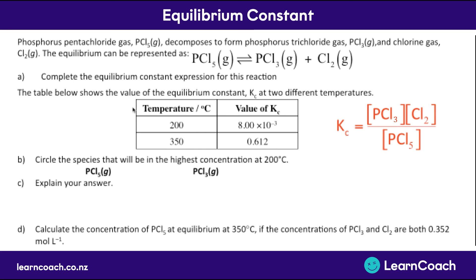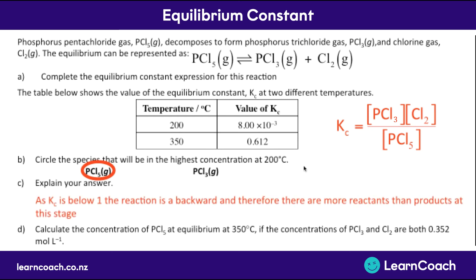For the next part, the table shows the value of the equilibrium constant at two different temperatures. At 200°C, Kc is 8 × 10⁻³ — a very small number, meaning there will be a lot more reactants than products. At 350°C, Kc is 0.612, meaning there are still more reactants because it's less than one, but not quite as many as at the lower temperature. The question asks us to circle the species with the highest concentration. Since it's a backwards reaction with more reactants, that means more PCl5. If Kc were greater than one, there'd be more PCl3 and chlorine gas. We explain our answer by saying: because Kc is below one, the reaction is backwards, therefore there are more reactants than products.